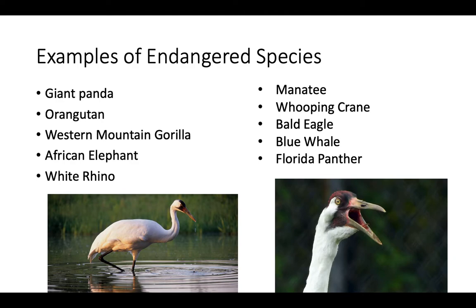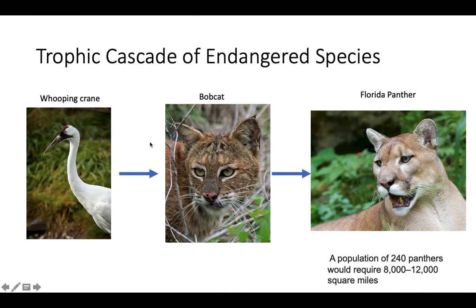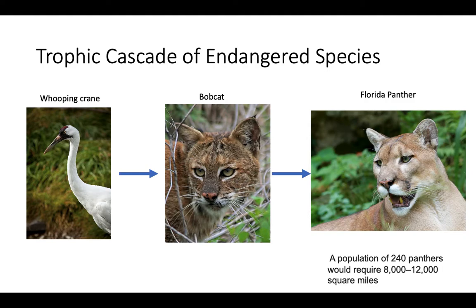Here are some examples of endangered species you're probably familiar with. The whooping crane is an interesting example because it's actually in the same food web as the Florida panther. The whooping crane is eaten by the bobcat, which is eaten by the Florida panther. The Florida panther is an endangered species because it's a large apex predator that requires a lot of territory — up to 8,000 to 12,000 square miles to support a population of 240 in Florida. That territory is often being destroyed by human development or rising sea levels. A lower Florida panther population means a higher bobcat population, ultimately leading to a lower whooping crane population. So we're seeing these trophic cascades of one endangered species leading to the endangerment of another.